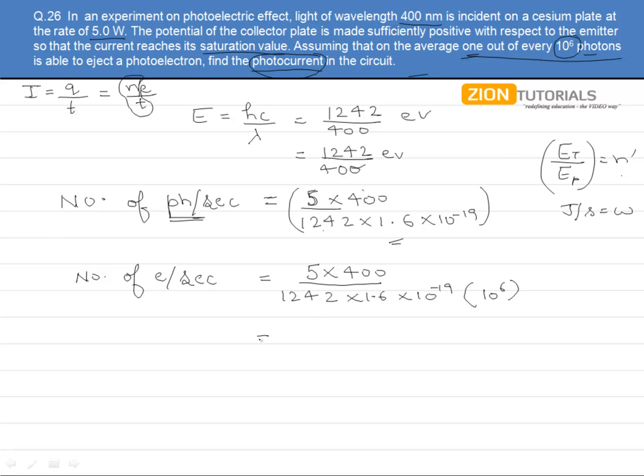We have got the number of photons per second, putting this value n by t, this is basically n by t only, putting this value over here. We need to find the current I, which is now the number of electrons per second into the charge of each electron.